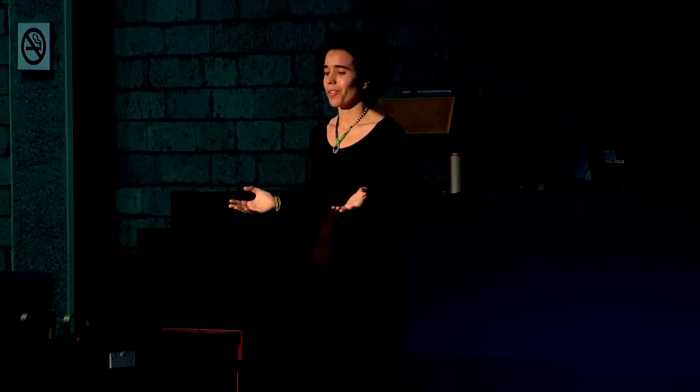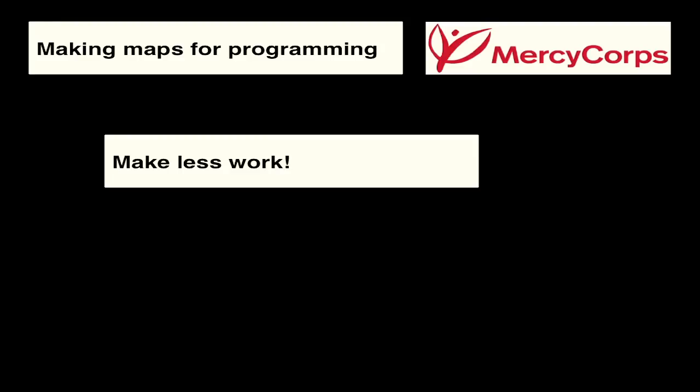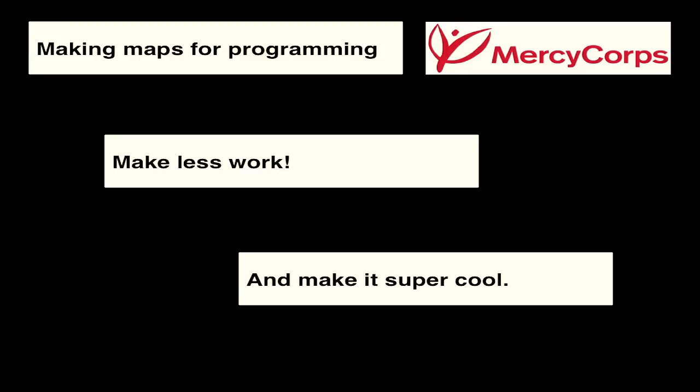There are three things I've learned about how to make crisis maps useful to teams. The first one is: make it less work. One of the Libya team recently emailed me and said this is super cool — I've just done what would normally be a report that takes three days of collating data in about half an hour. These are teams working in very high-pressure environments. If you make it less work, it's more likely to be adopted.